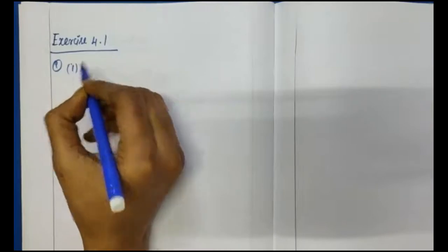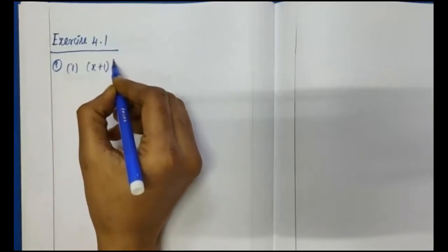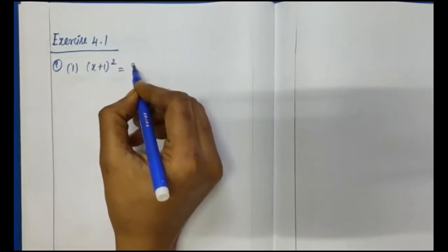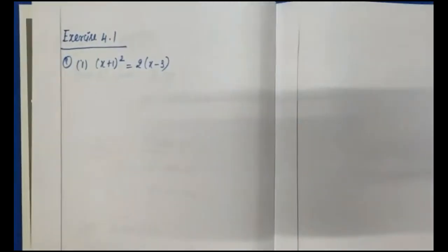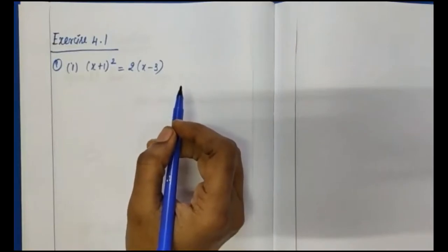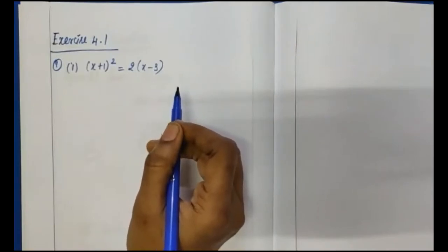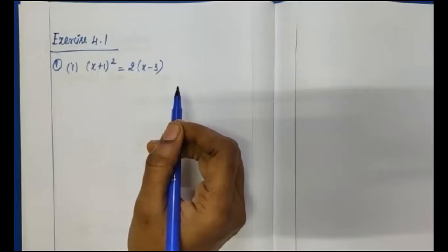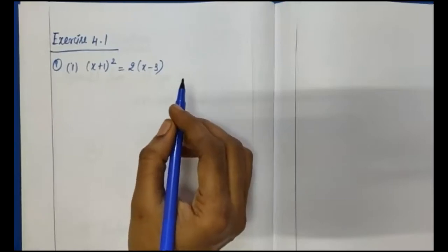Question number 1, Division 1. The equation is: x plus 1, the whole square, is equal to 2 times x minus 3. We have to simplify this equation so that all terms are equal to 0. The final line should be in general quadratic format: ax squared plus bx plus c equals 0. This is a quadratic equation — it must have degree 2.